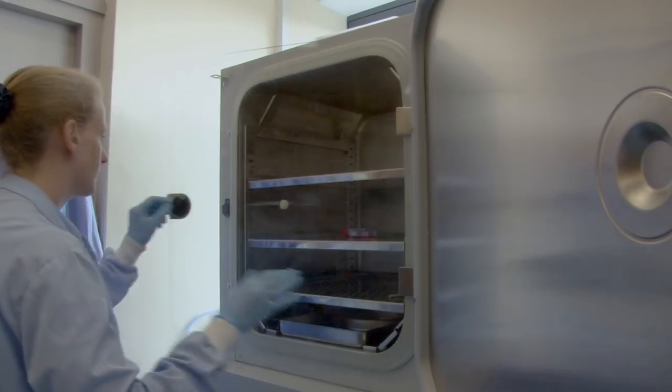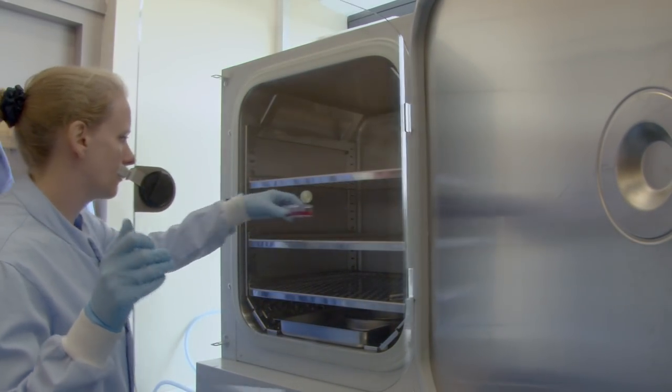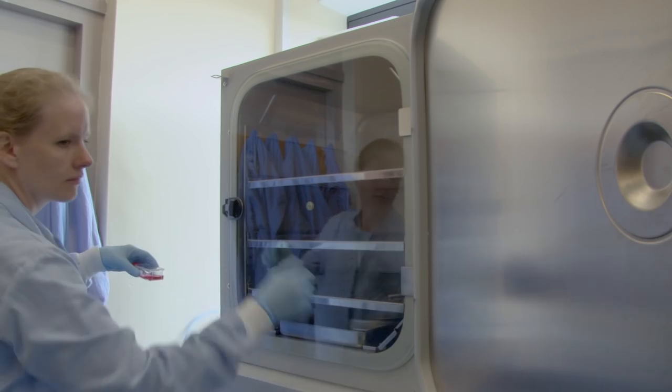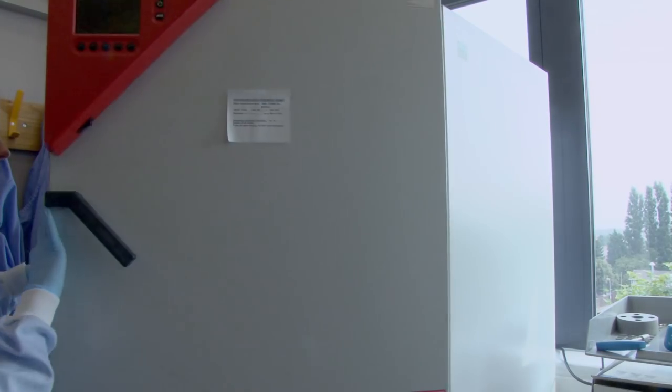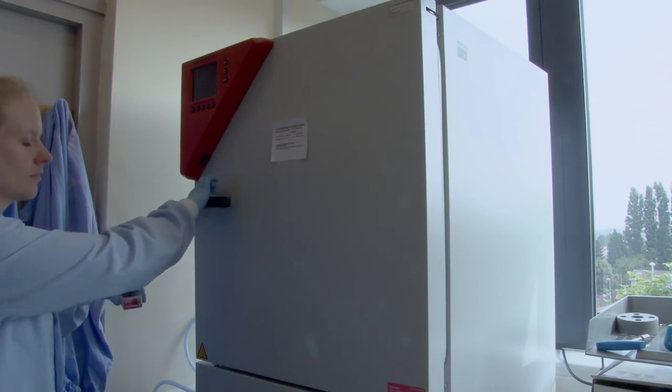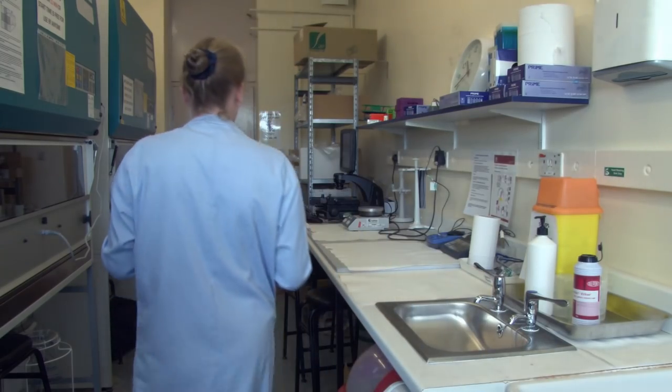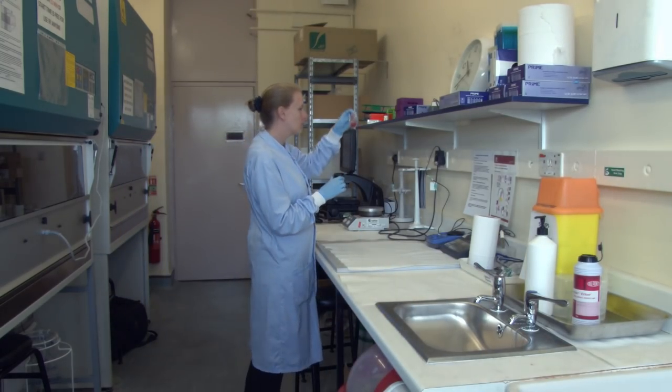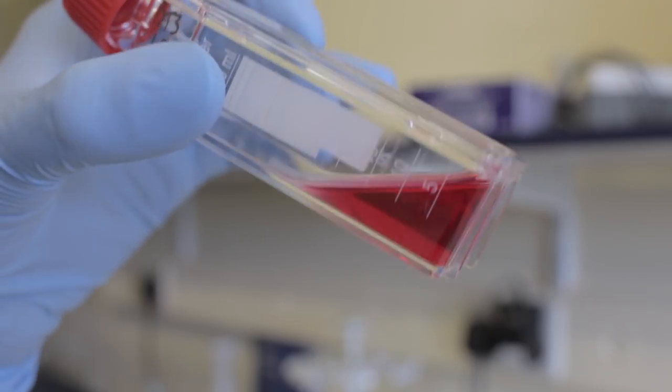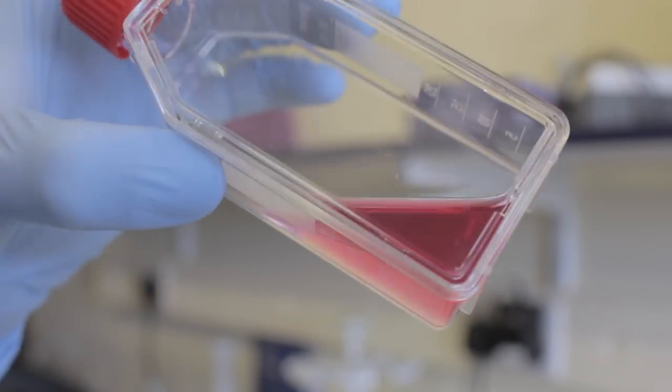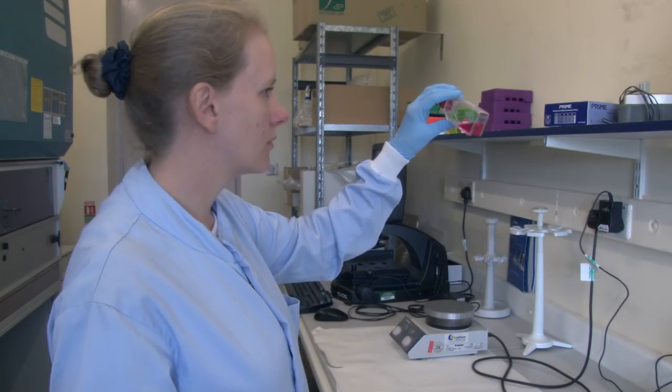The first step is to visually inspect your culture. Remove it from the incubator and look at it. The cells should be stuck to the surface of the culture vessel. There should be no apparent mold or cloudiness and the color of the medium should be unchanged.